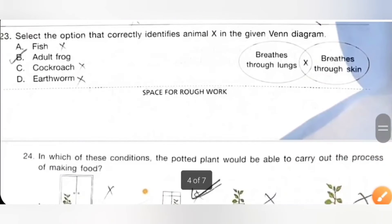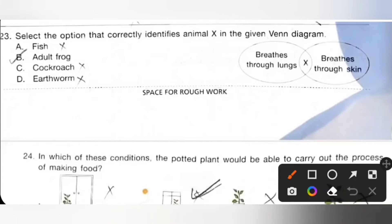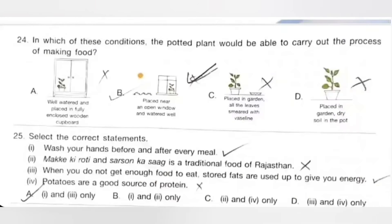Twenty-three: Select the option that correctly identifies animal X in the given Venn diagram. X is an animal which breathes through lungs and also breathes through skin. A: Fish, B: Adult frogs, C: Cockroach, D: Earthworm. So adult frog breathes through lungs when they are on land and breathes through moist skin when they are in water. So option B is the correct answer.